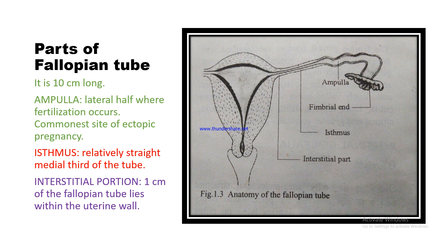Parts of the fallopian tubes: the tube is 10 cm long. The ampulla is the lateral half, where fertilization occurs and is the commonest site of ectopic pregnancy. The isthmus is the relatively straight medial third of the tube. The interstitial portion — 1 cm of the fallopian tube — lies within the uterine wall.